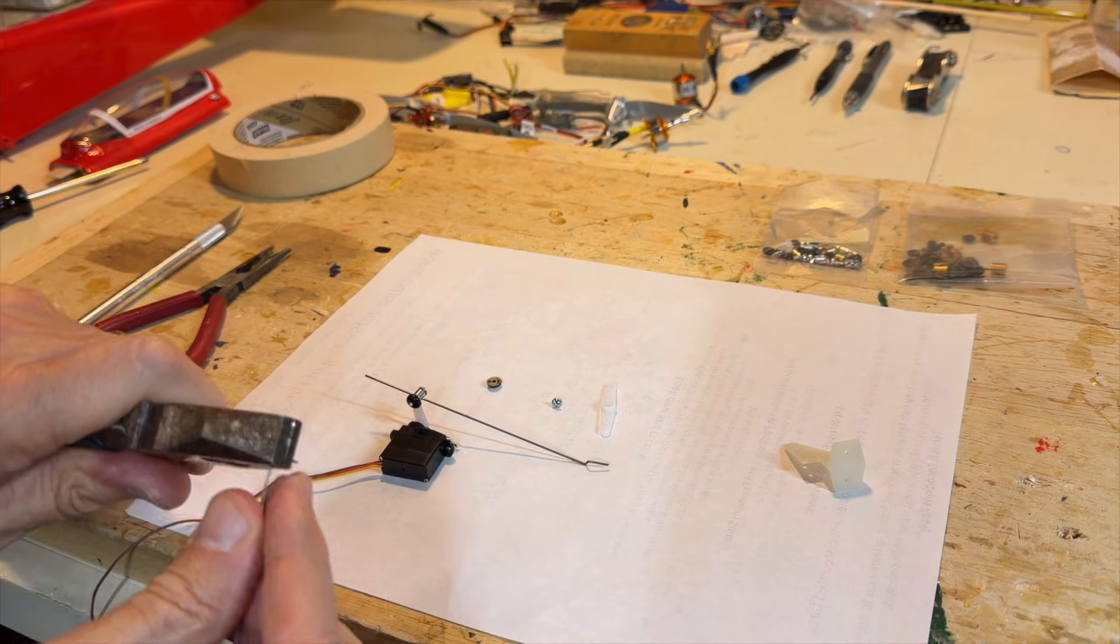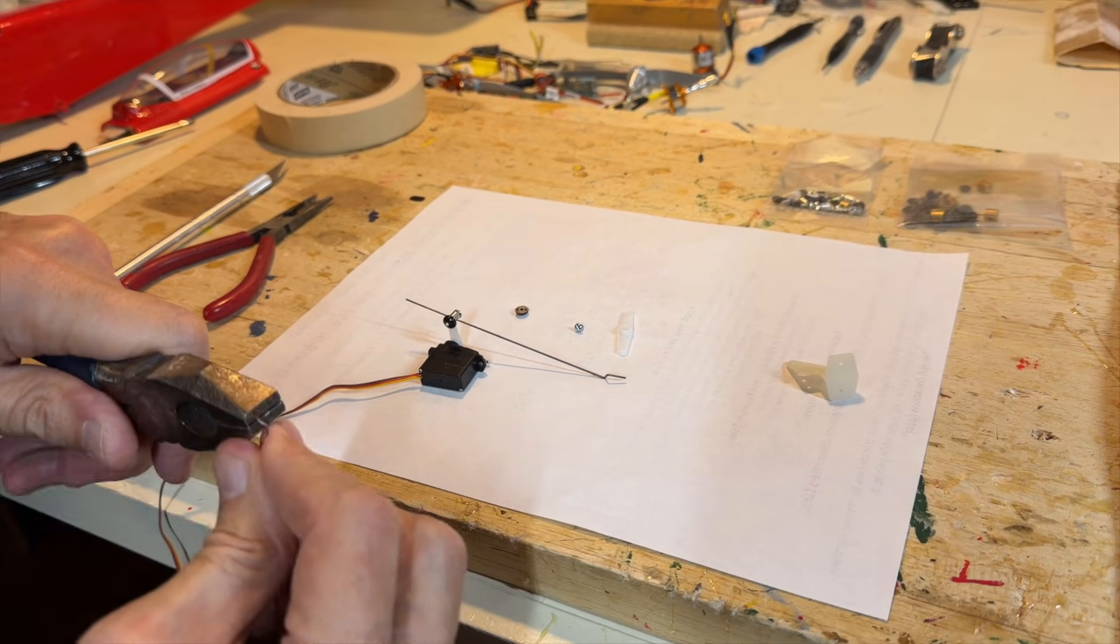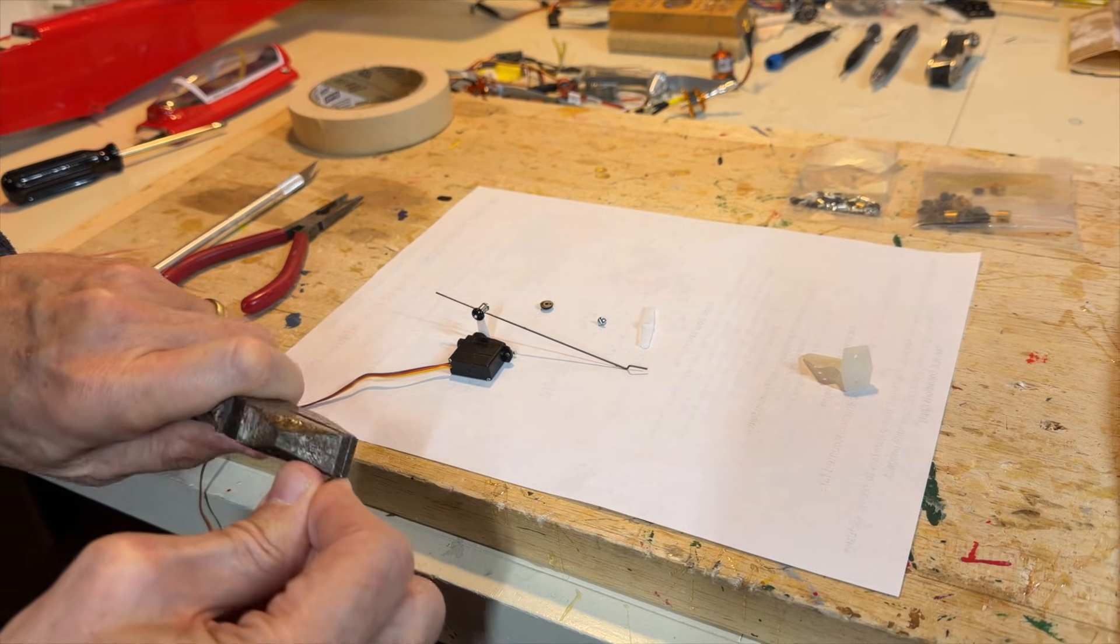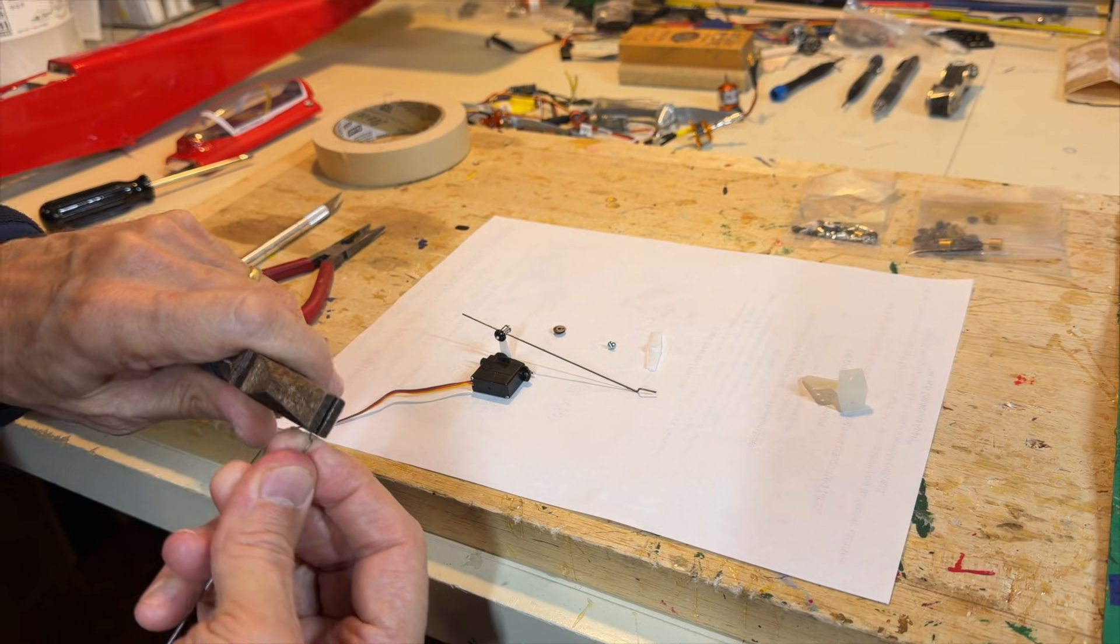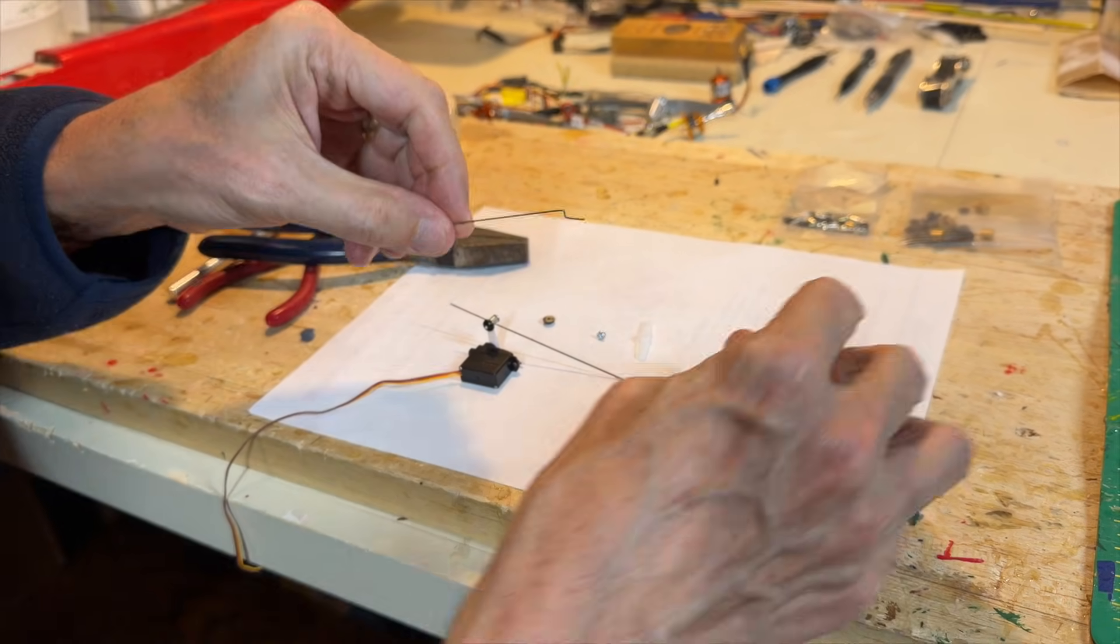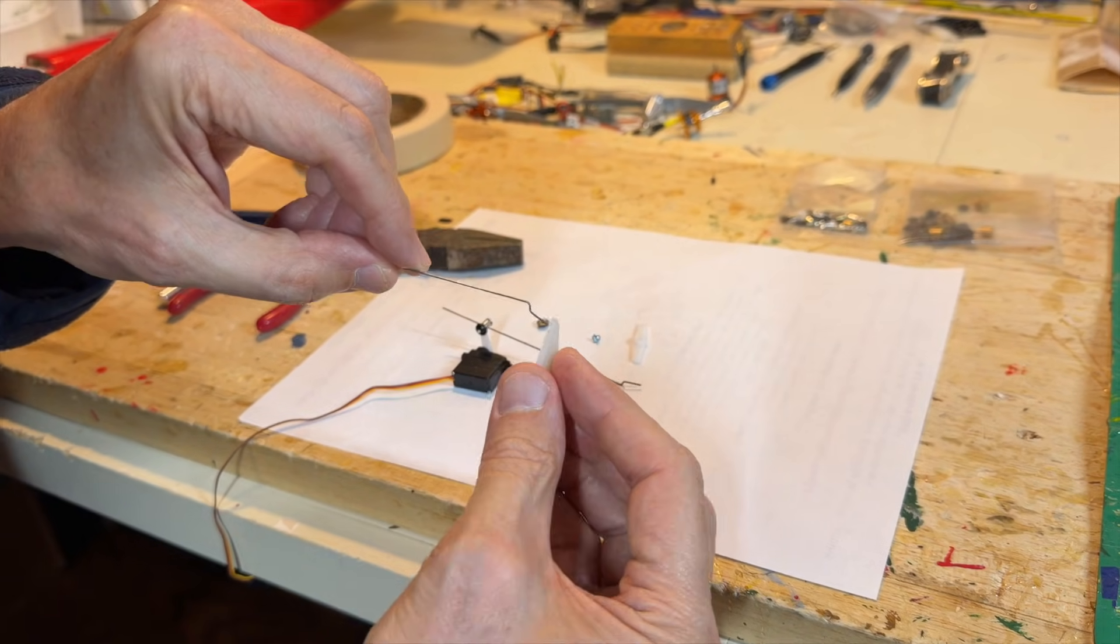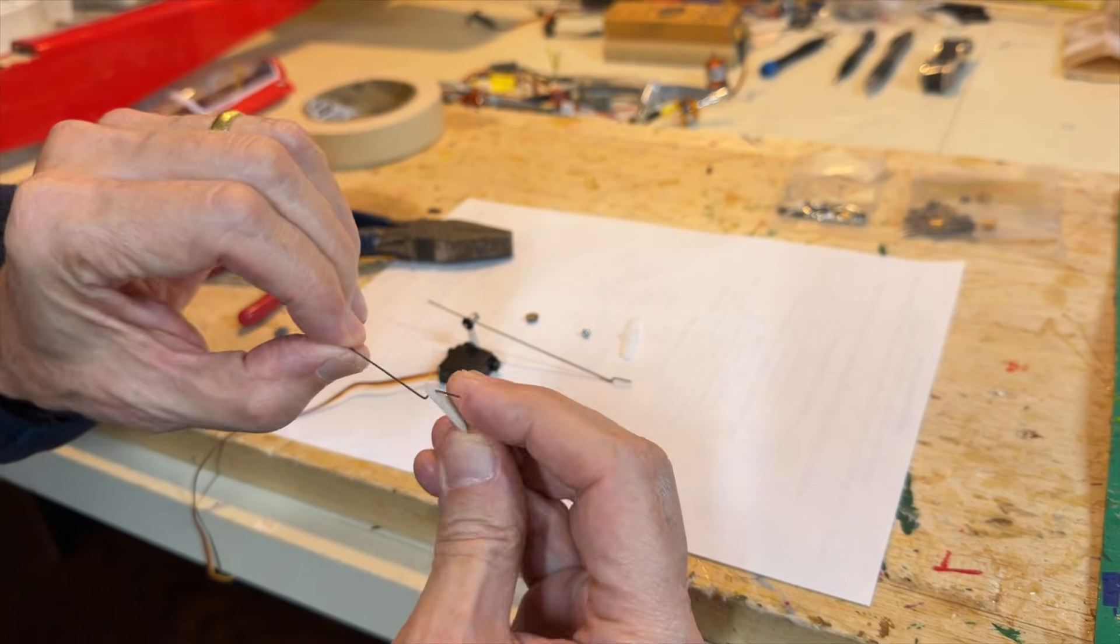Then we put the pliers like this, bend down another 90 degrees, and then we simply twist it. And that way, with a little bit of practice, you can make a pretty good Z-bend like that. This is a very good way to connect it with your control arms. That's not going anywhere.